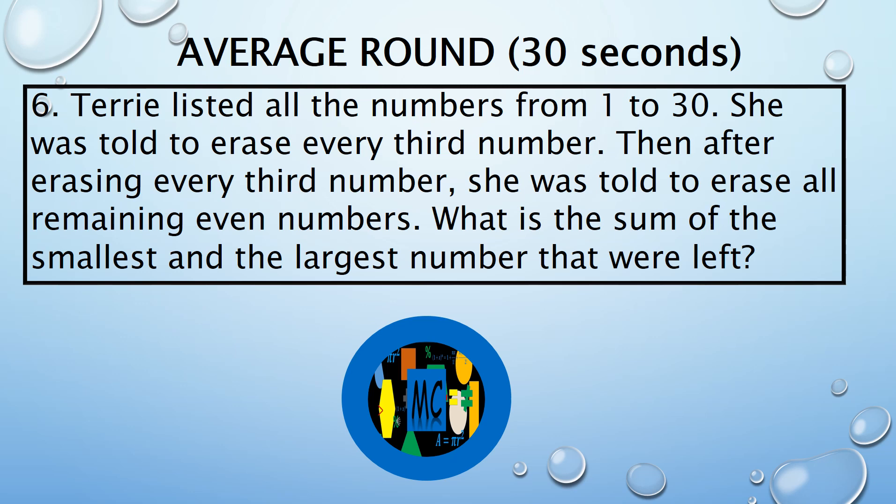Terry listed all the numbers from 1 to 30. She was told to erase every third number. Then after erasing every third number, she was told to erase all remaining even numbers. What is the sum of the smallest and the largest number that were left?